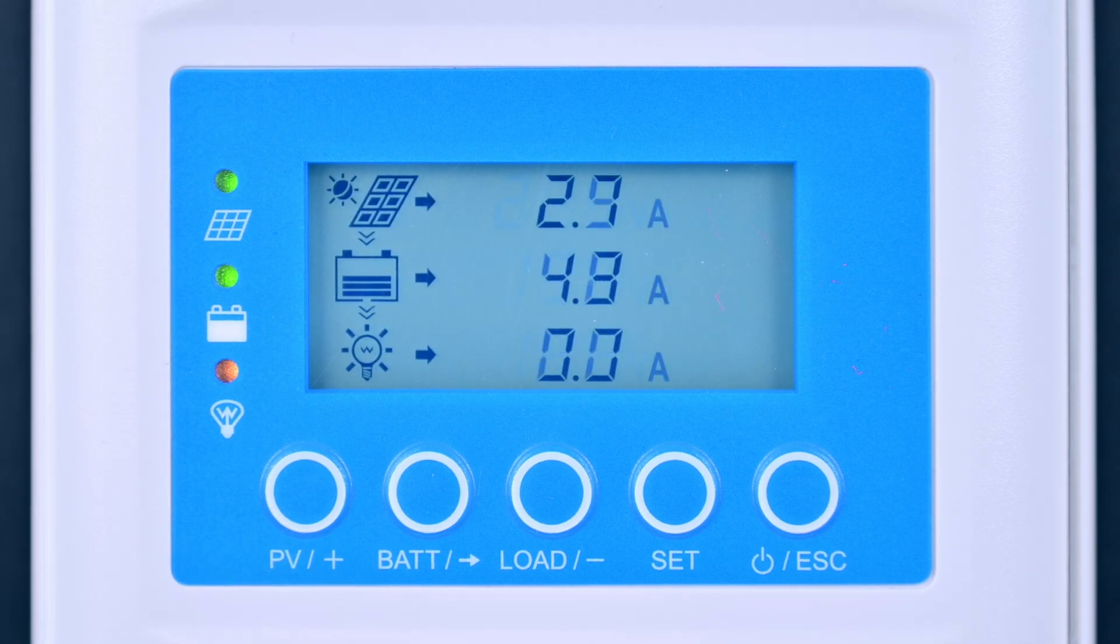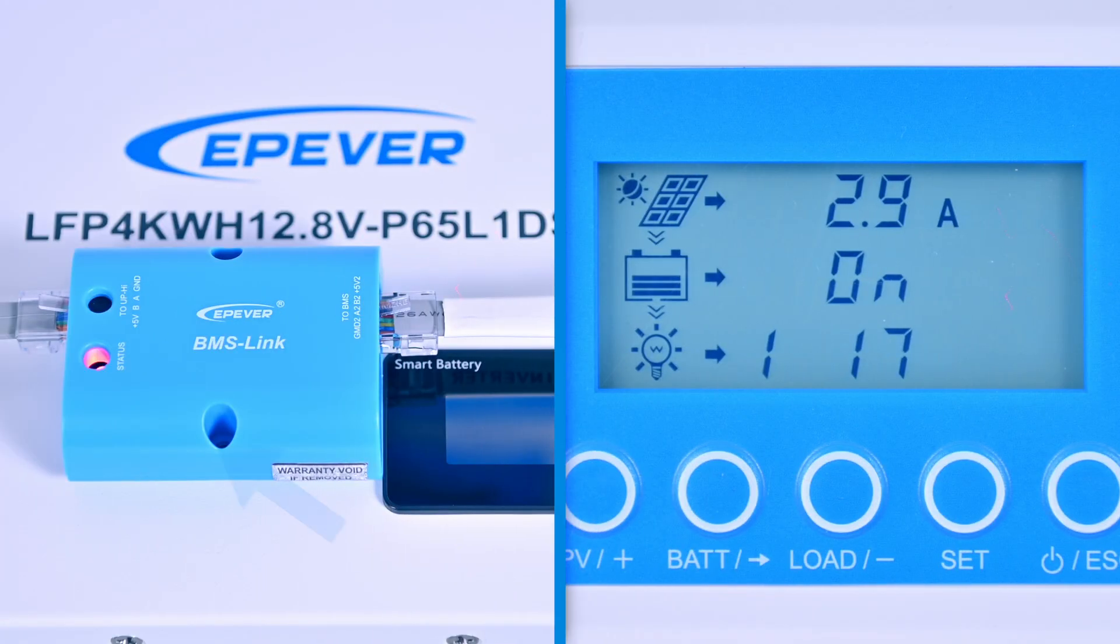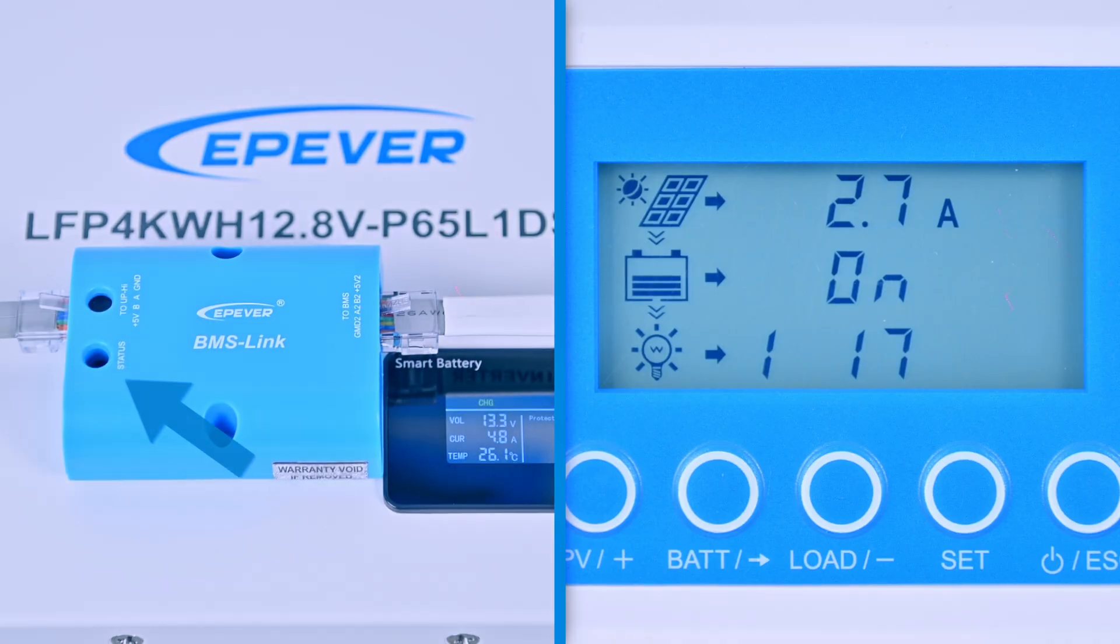Once powered on, the battery status bar will display the ON icon indicating the controller is connected. Meanwhile, the BMS-e-link module's indicator light will change from red to green and flash continuously, showing that the controller is connected to the battery and data is being transmitted.